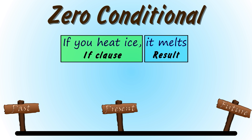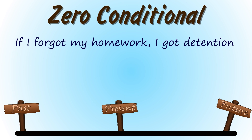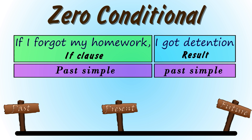However, we can also use the zero conditional to talk about things that were true in the past. For example, if you heated water to 100 degrees Celsius, it boiled. The past simple expresses that this was always true in the past. Another example: if I forgot my homework, I got detention — meaning I always got detention. So remember, we can use the zero conditional to talk about things that are true now and things that were true in the past.